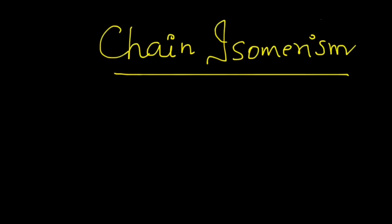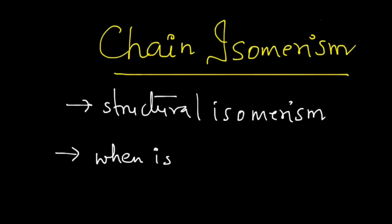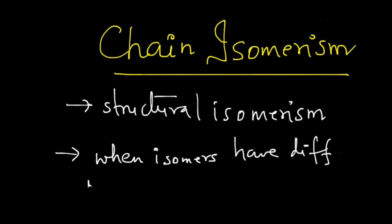Let's talk about chain isomerism. It is a type of structural isomerism. In fact, the first type of structural isomerism that you should look for is chain isomerism. When do we observe it? When structural isomers have different parent chain lengths — the length of the parent chain should be different. Let's see what we mean by that with a few examples.